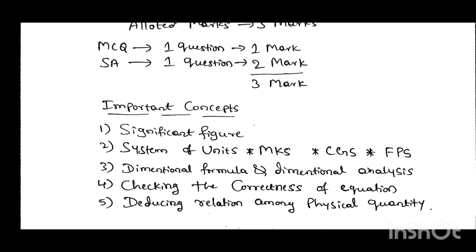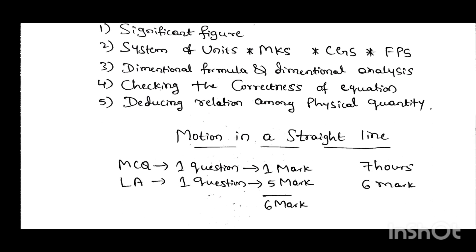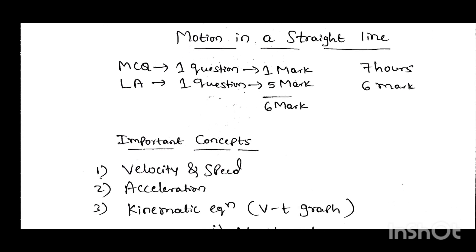If you prepare very well about these concepts, you will easily get three marks. Now I am moving to the next chapter: Motion in a Straight Line. From this chapter, in the annual exam you are going to get a total of six marks, and the teaching hours is seven. These six marks are distributed as: one MCQ question carrying one mark, and one long answer question carrying five marks — total six marks.